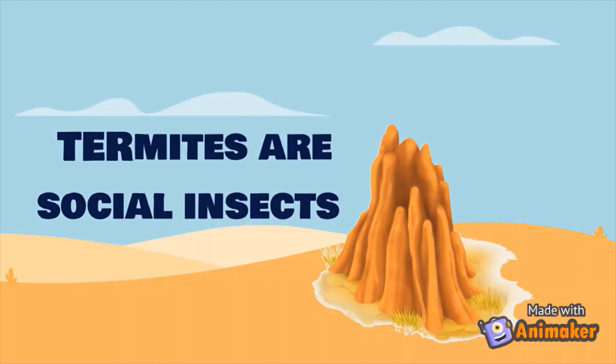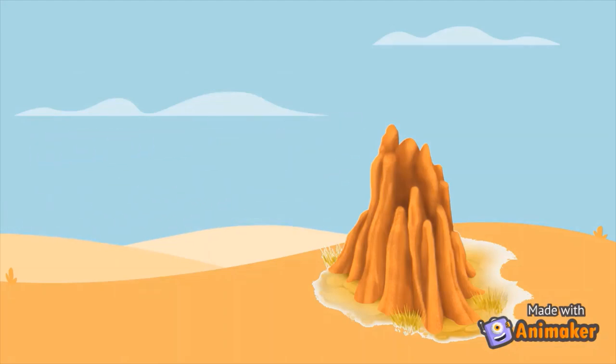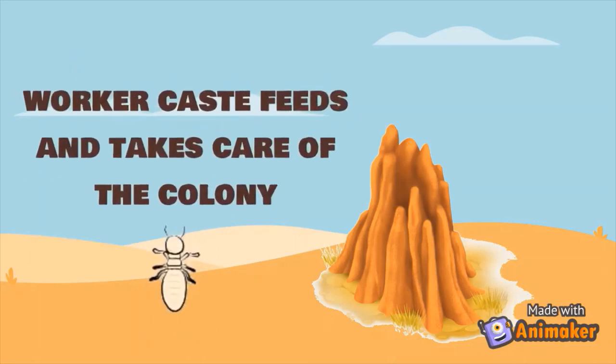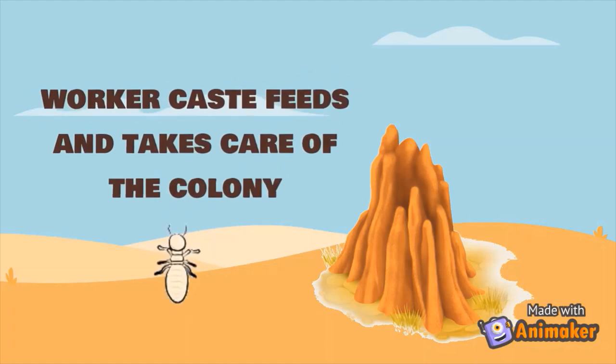Termites are social insects. In their colony, they have castes that play specific roles. For example, soldier castes ensure the safety of the colony against predators, while worker castes feed and take care of the colony.